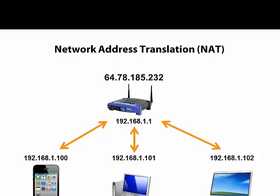One more note on routing. In IPv4, we have three network ranges that are for private use only, meaning they're not routable on the public internet. For example, at home you might have a phone, a computer, a laptop, and other devices, but your ISP only gives you one public IP address because there's a shortage of them — we're running out of IPv4 addresses.